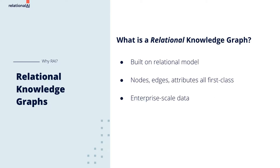Most graph databases are implemented with objects and pointers. A relational knowledge graph is built around a relational schema implemented as tables. The nodes, edges, and attributes of the graph are all first-class citizens in the schema. The relationships that provide meaning also link the tables.